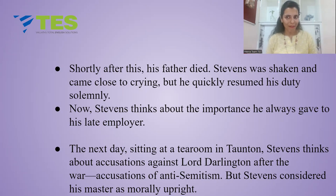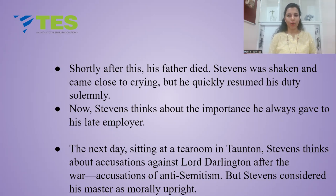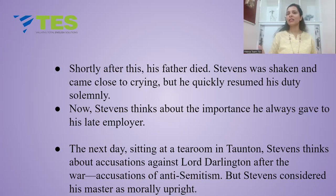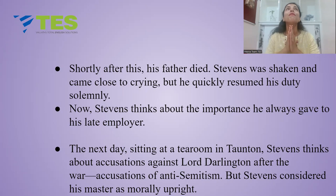The next day of Stevens' travel, he is sitting at a tea room in Taunton — a town in England. He thinks about accusations against Lord Darlington after the war, especially accusations of anti-Semitism, how Lord Darlington became against Jews. But Stevens still considers his master as morally upright. Stevens literally looks at Lord Darlington as a father figure, as a godly figure.